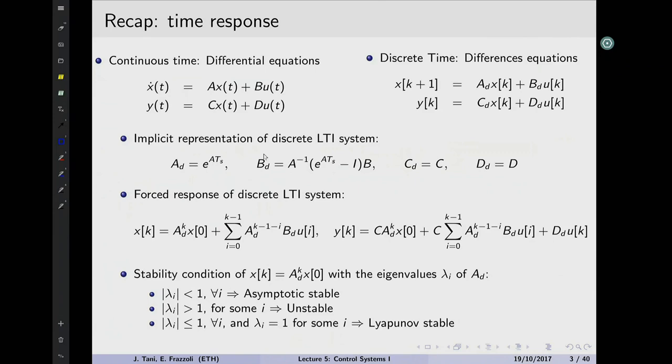Now we said, so what do we need to actually find the solution to this set of equations? X dot equals AX plus BU, and Y equals CX plus DU — it's basically a system of first-order differential equations. So what do you need to solve it? You need definitely some initial conditions, you need an input, and the knowledge of the system, that is ABCD. So we said, how do we figure out the solution and, most importantly, how do we interpret it?